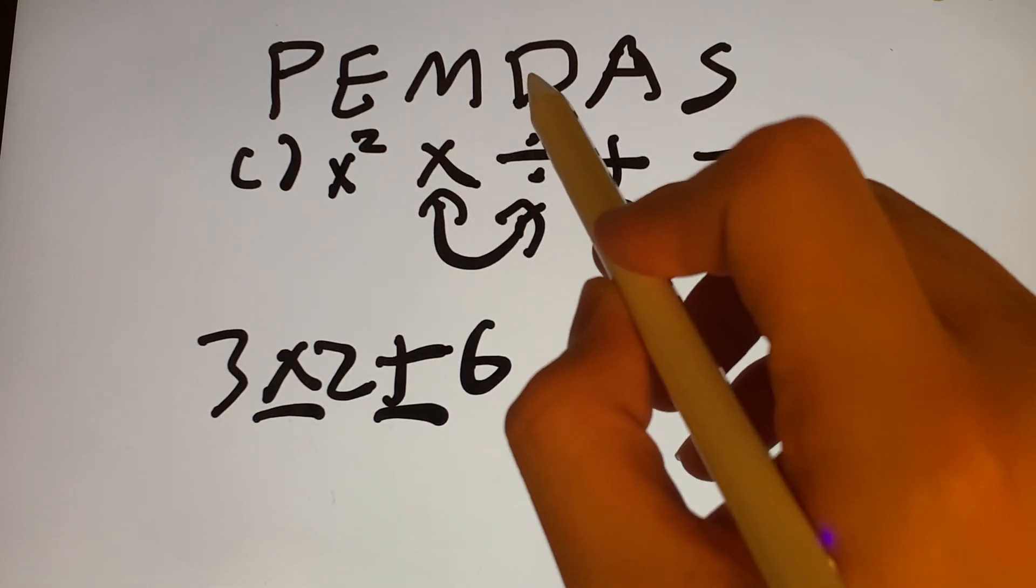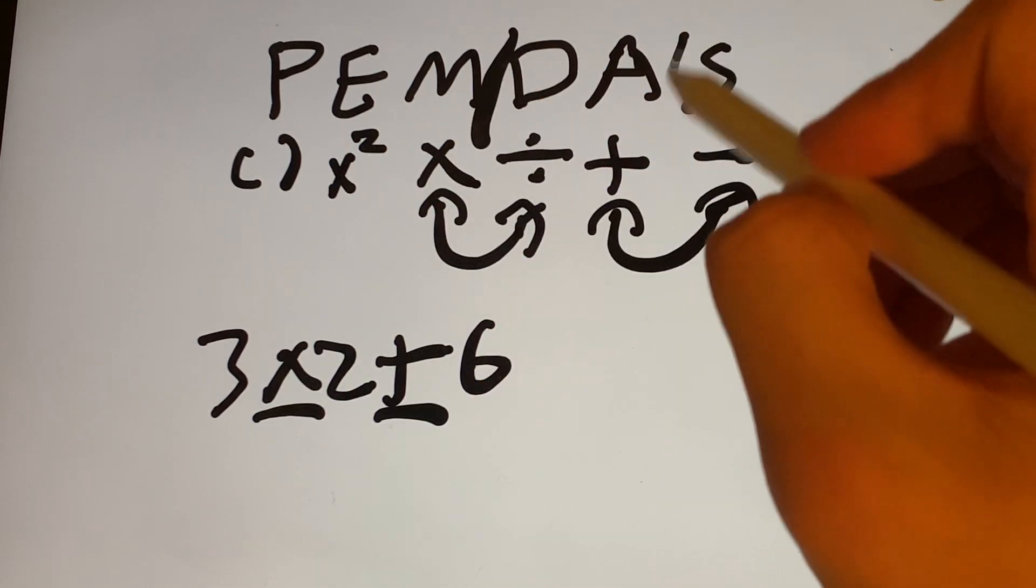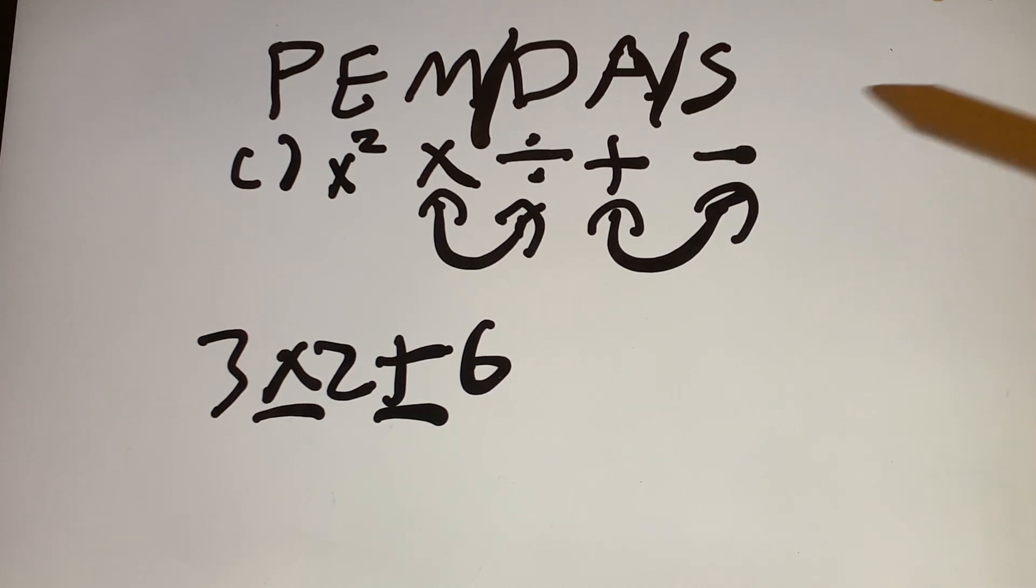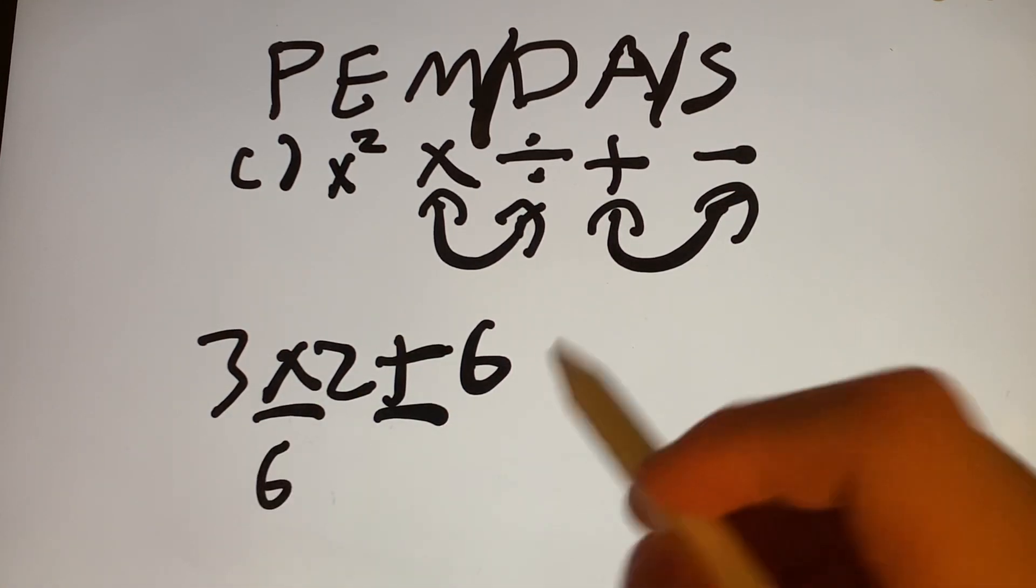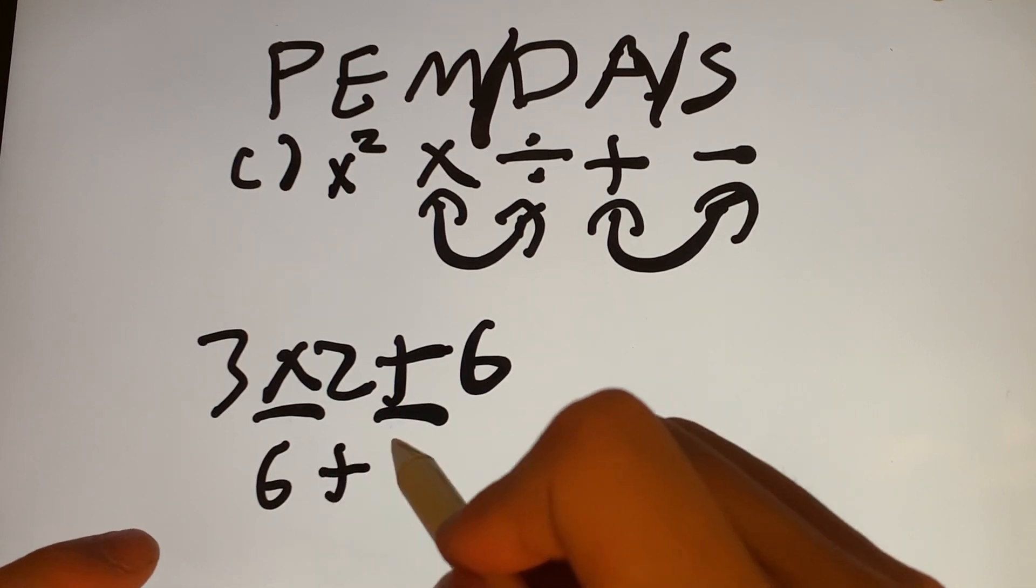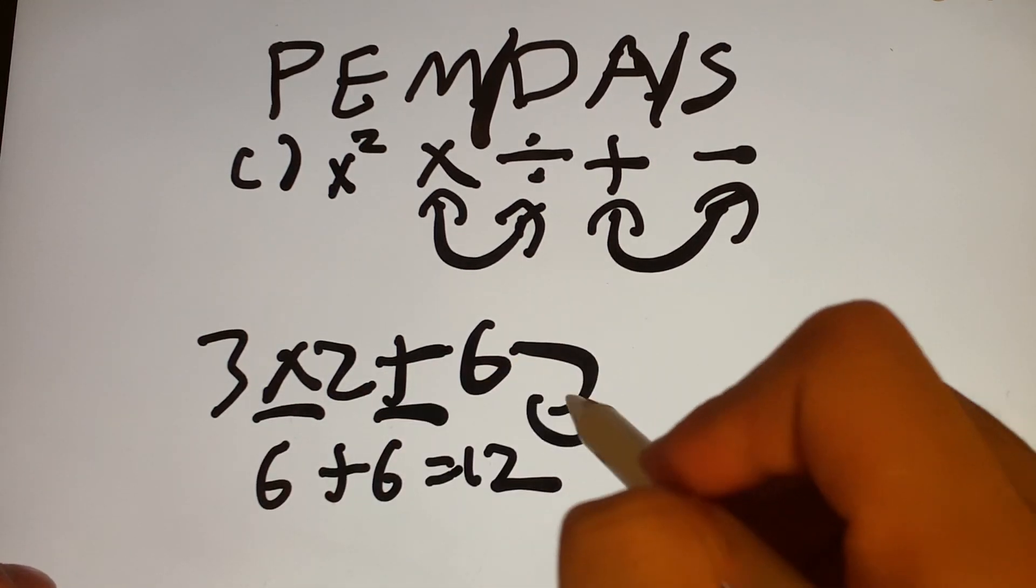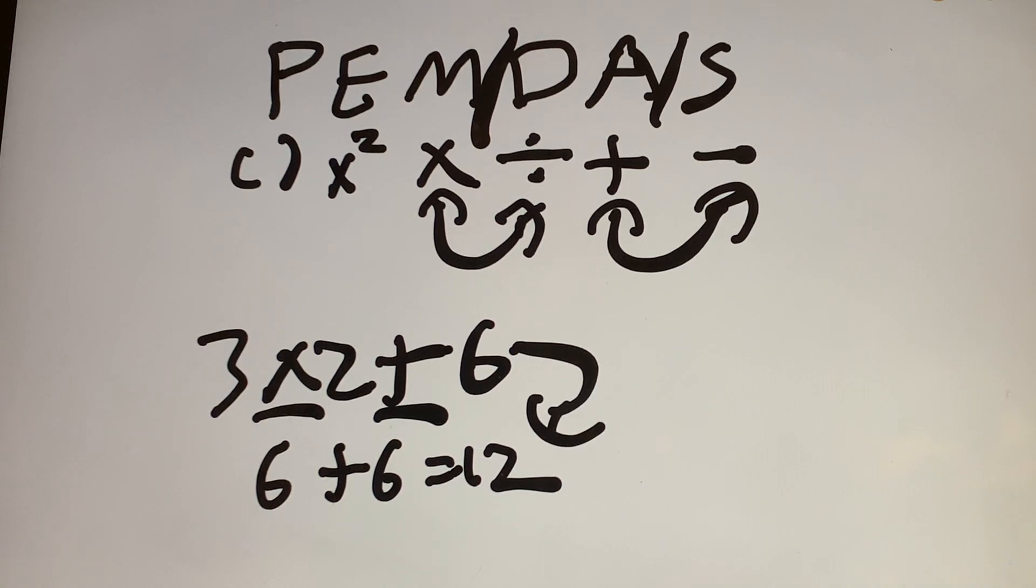you see that multiplication slash division come before addition slash subtraction. So you're going to do multiplication first. So it's 3 times 2. That's going to give you 6. And then 6 plus 6 is going to give you 12. So this expression right here is equal to 12.